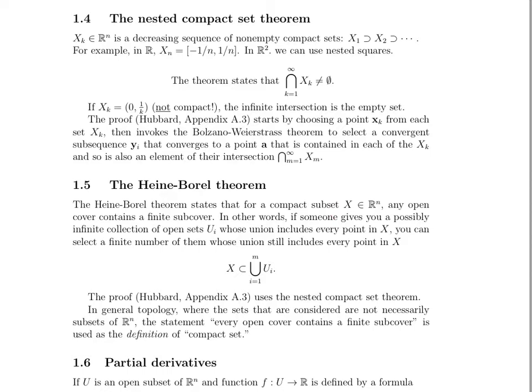x is a subset of this finite union of the u's. The proof, which is also in the appendix, uses this nested compact set theorem. In general topology, where the sets are not necessarily subsets of Rn, the statement 'every open cover contains a finite subcover' is actually used as the definition of a compact set.